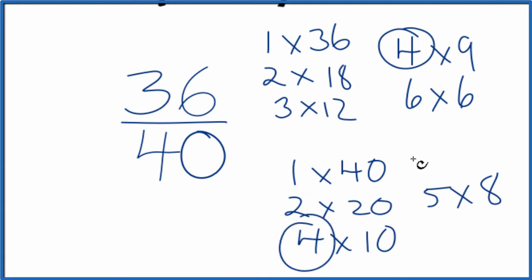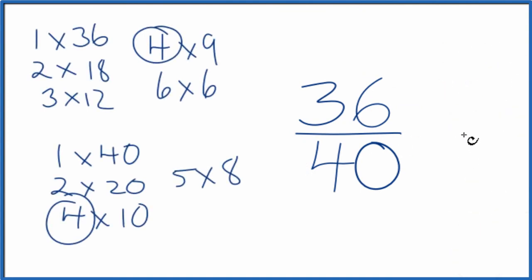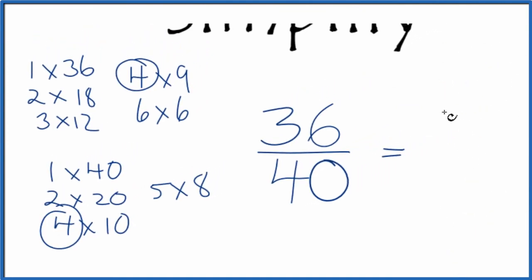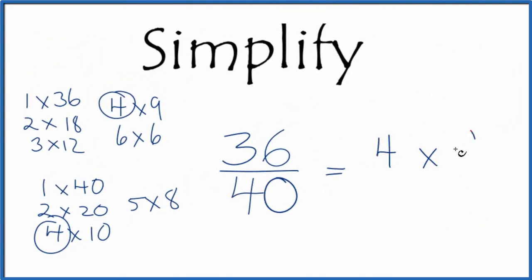Let's move these over here. So we could say 4 times 9 equals 36, and 4 times 10 equals 40. Since we have 4 on the top and the bottom, let's get rid of those.